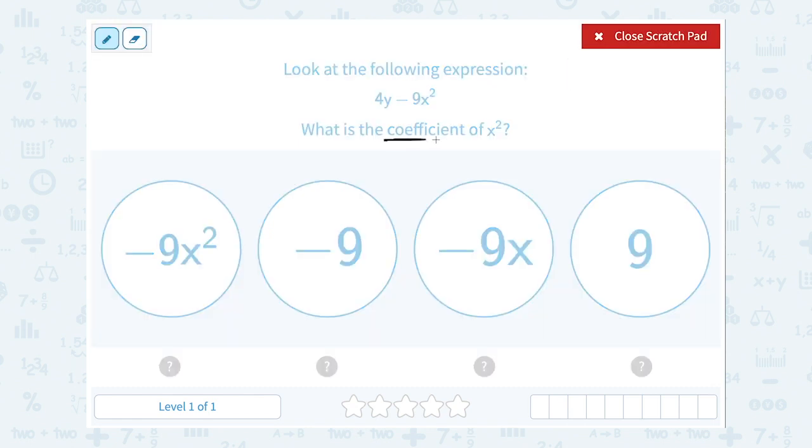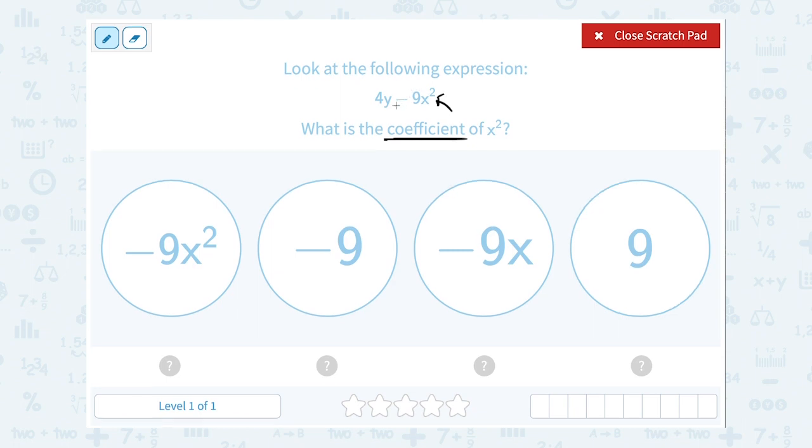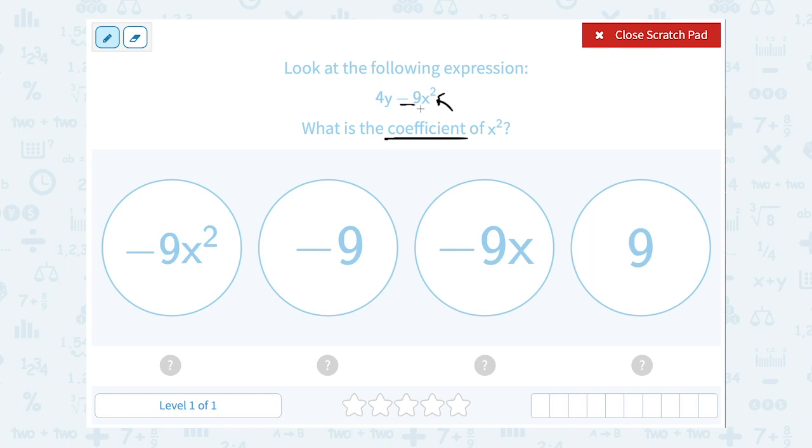Well the coefficient is the number in front. So on the x squared term, I want to look and see what the number in front is. Now the sign is part of it. Since it's minus 9x squared, that means our term is negative 9x squared. So the coefficient is not just 9, it's actually negative 9.